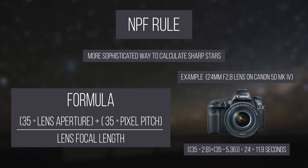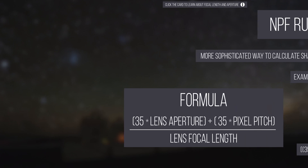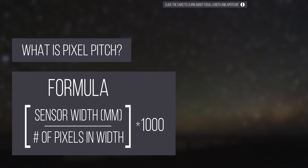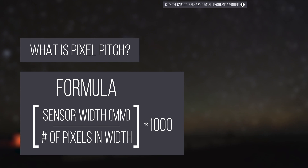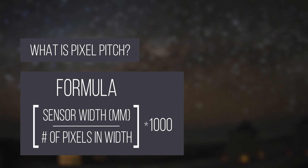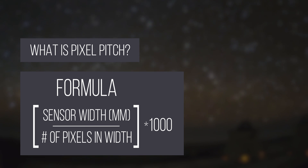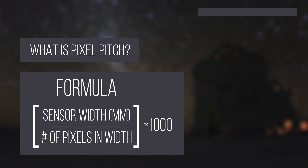You probably know what aperture and focal length are, but what's pixel pitch? Pixel pitch is the camera sensor's physical width in millimeters, divided by the number of pixels in width, times 1,000 to measure it in microns.